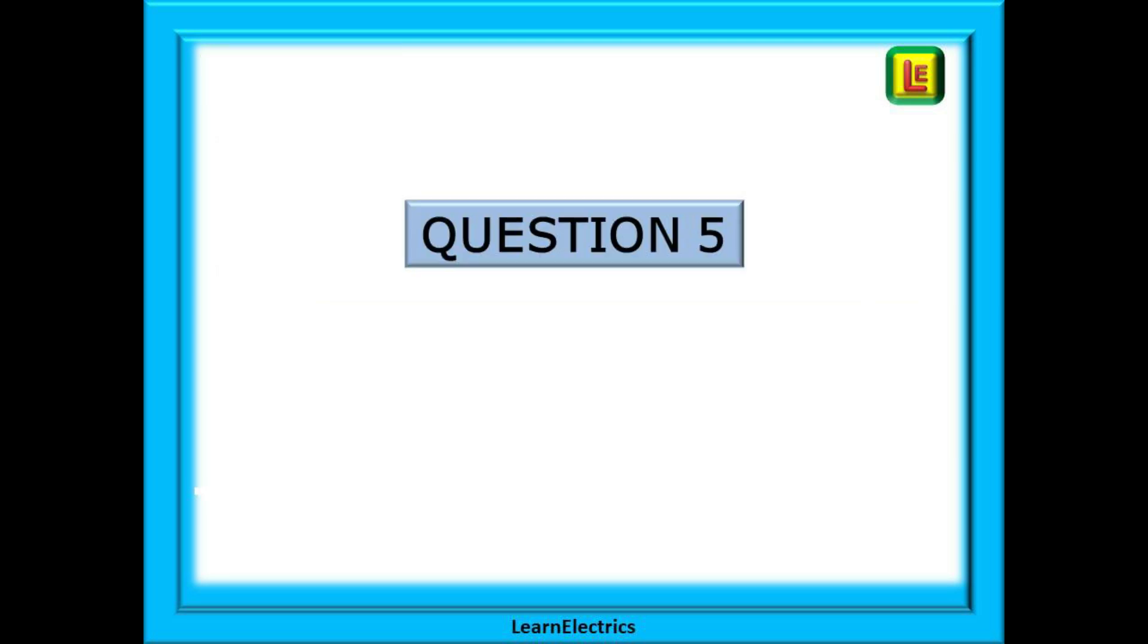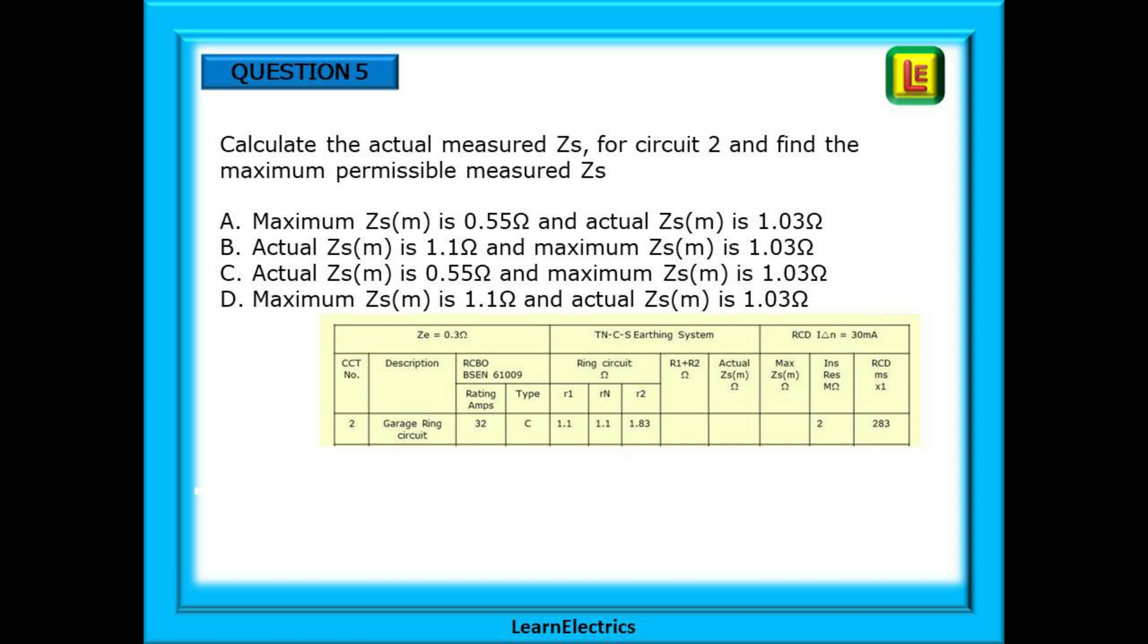Now question 5. We must calculate the actual measured Zs for circuit 2 and find the maximum permissible actual measured Zs. Again pause the video whilst you find the answers.